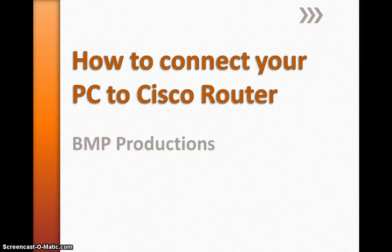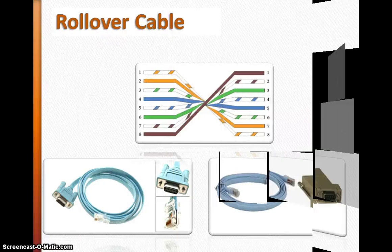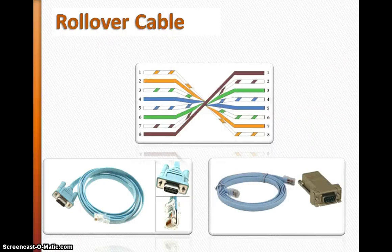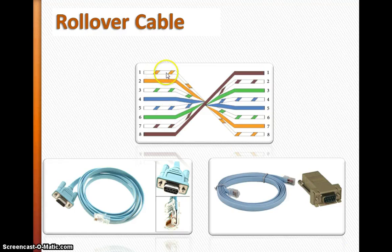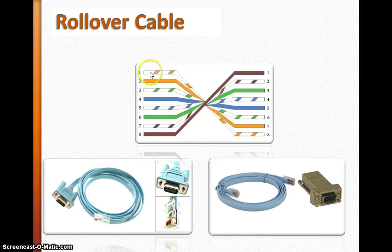This is about how to connect your PC to a Cisco router. First thing first, you need the rollover cable. The rollover cable connection looks something like this — pin number one goes to pin number eight, two goes to seven, three goes to six, and so on. Basically you flip the cable.